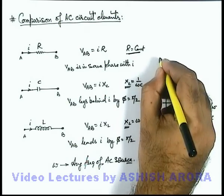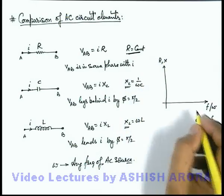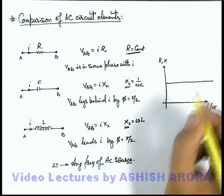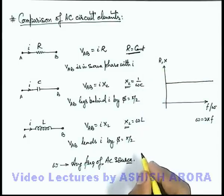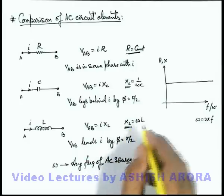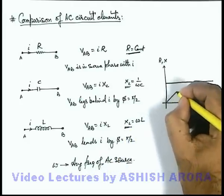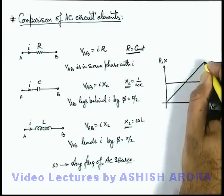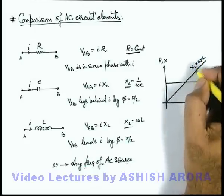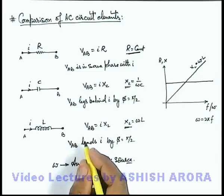If this is plotted for R and X, we can see the value of R remains constant. It does not change with angular frequency. But if we talk about X_L, it is written as ωL. It is proportionately changing with angular frequency, so it must be a straight line which gives X_L = ωL, where inductance is a constant.